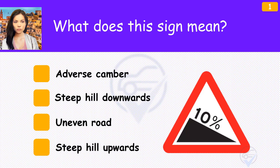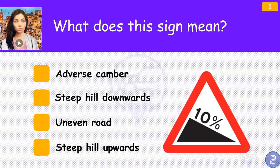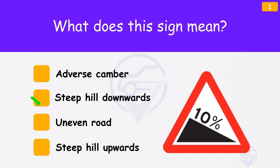What does this sign mean? The answer is 'Steep hill downwards'. This sign gives you an early warning that the road ahead will slope downhill. Prepare to alter your speed and gear. Looking at the sign from left to right will show you whether the road slopes uphill or downhill.